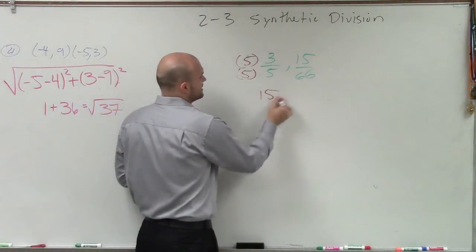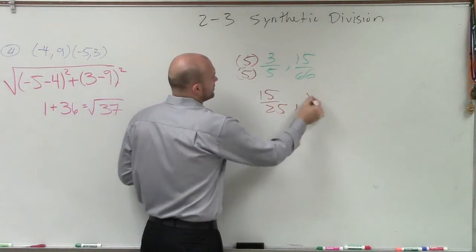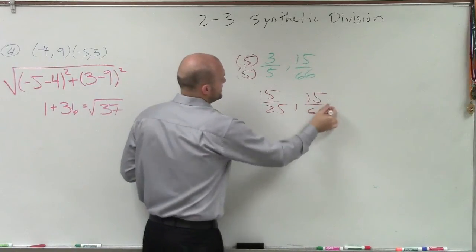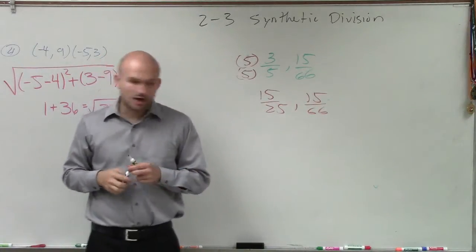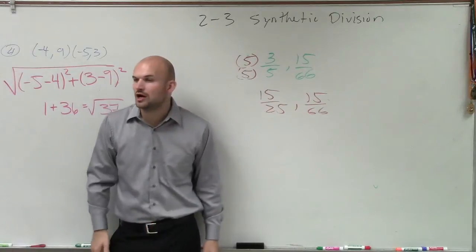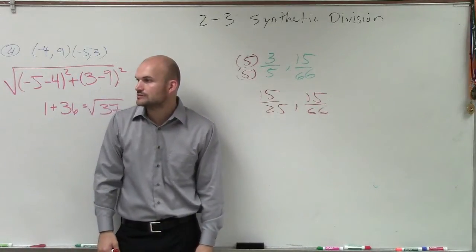So therefore my ratio is fifteen over twenty-five. Well, is that the same thing as fifteen over sixty-six? No. So therefore this is an example of non-equivalent ratios. Right?